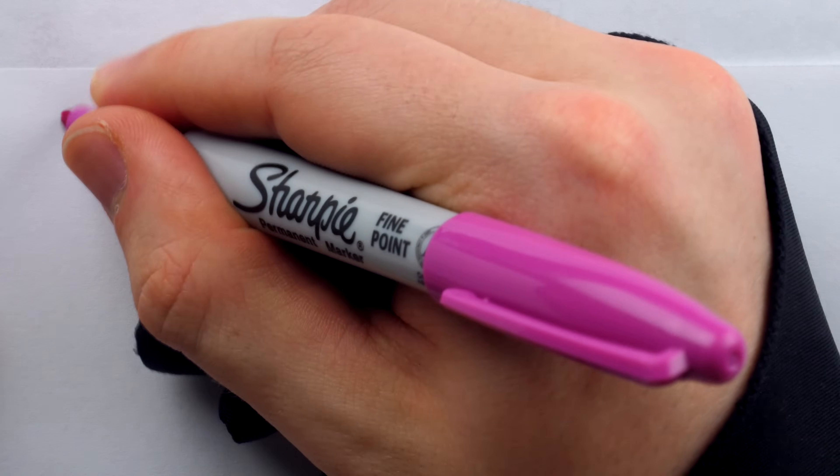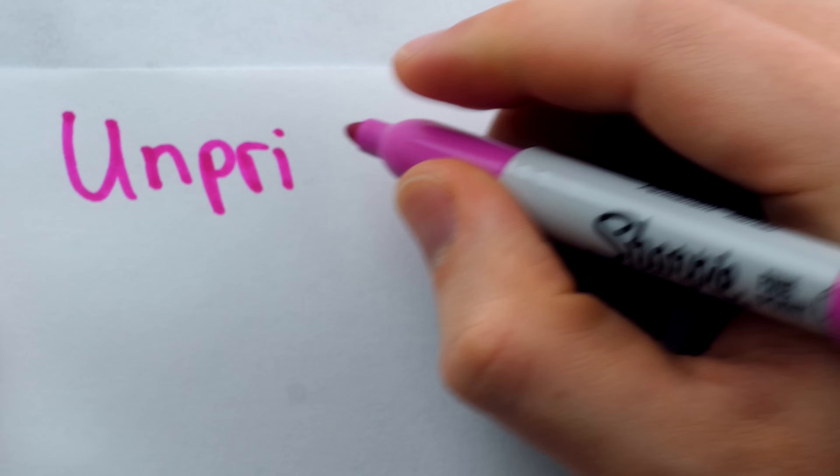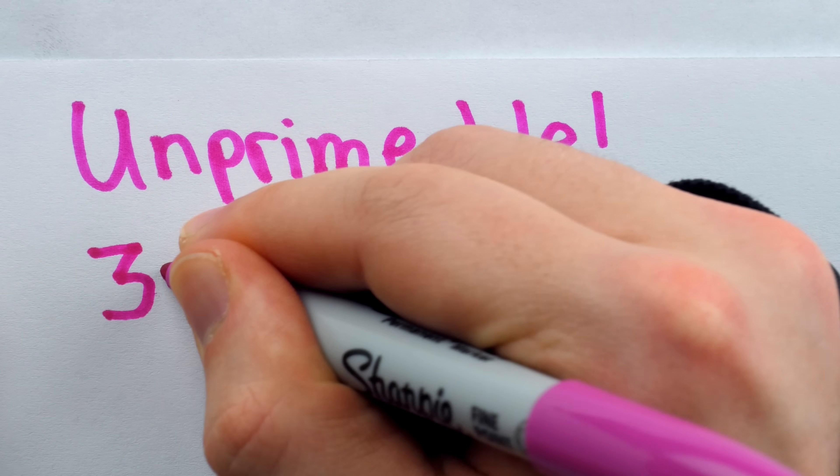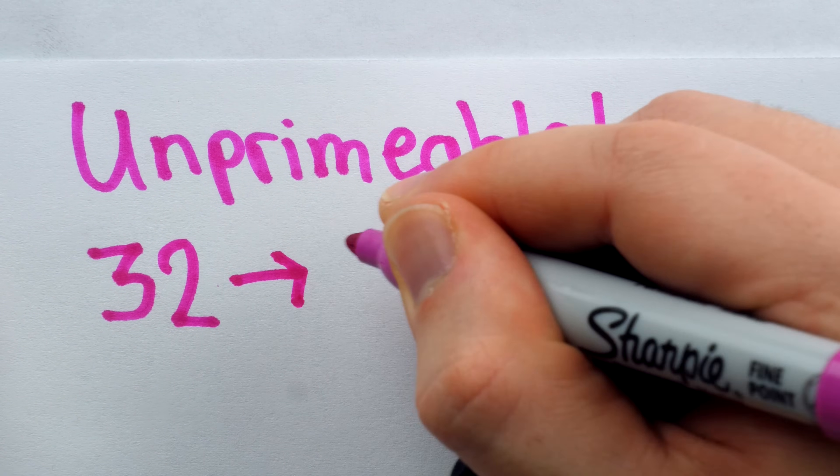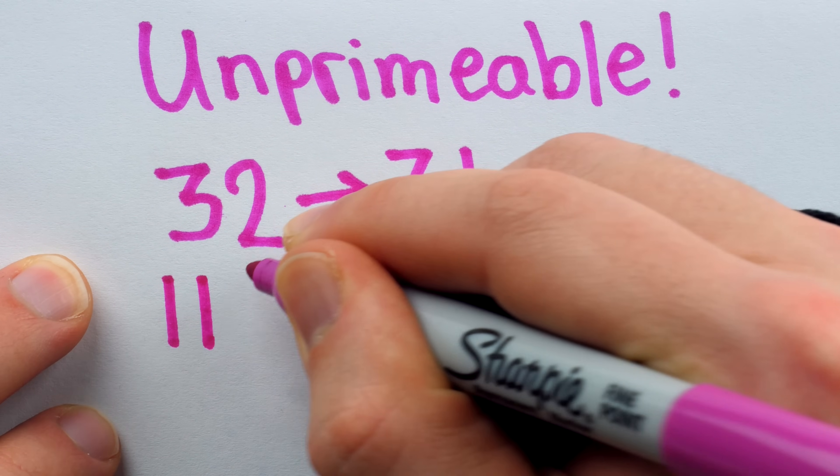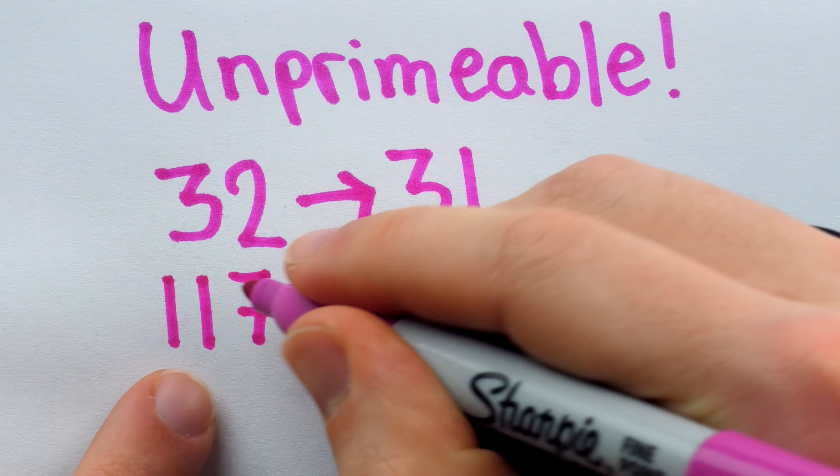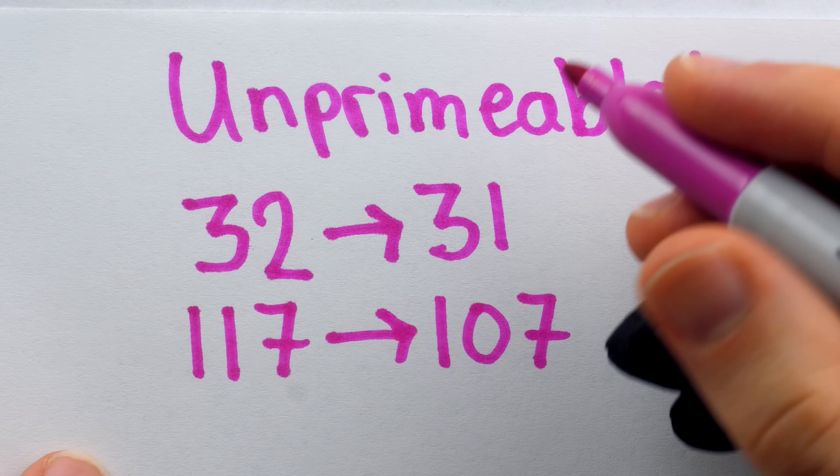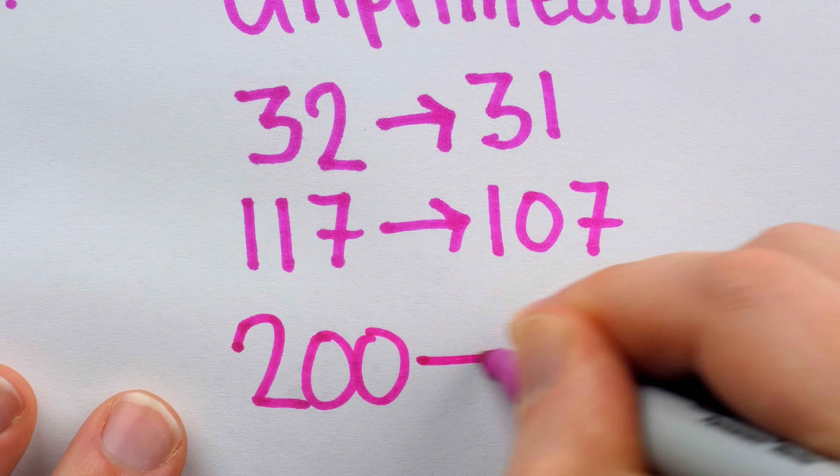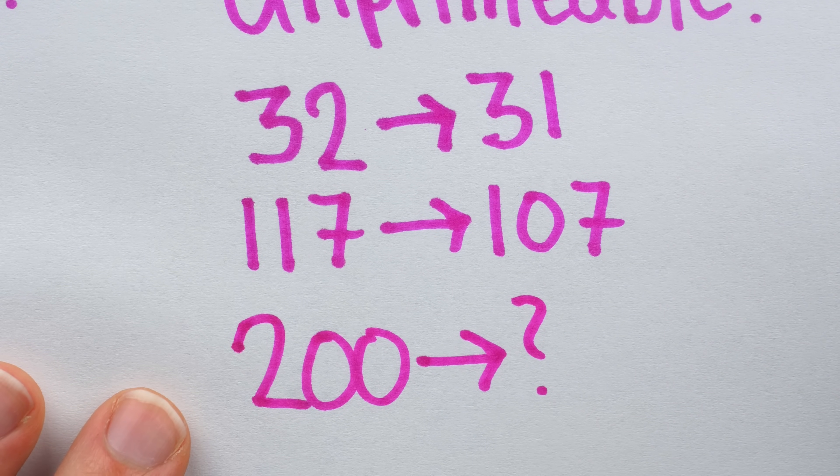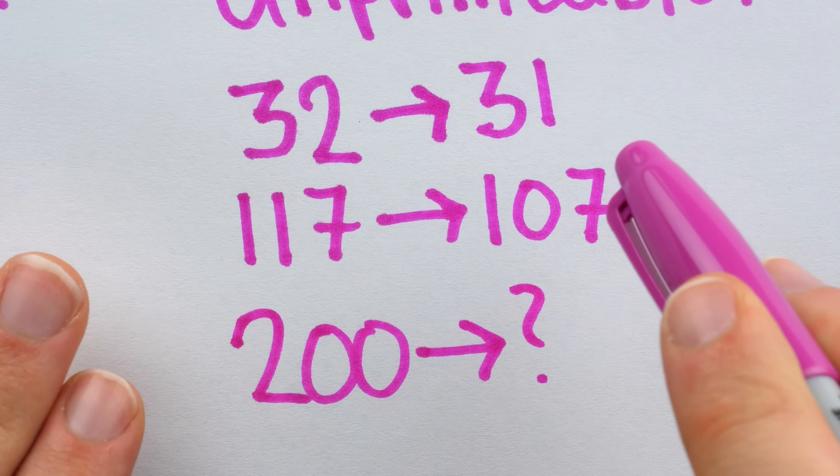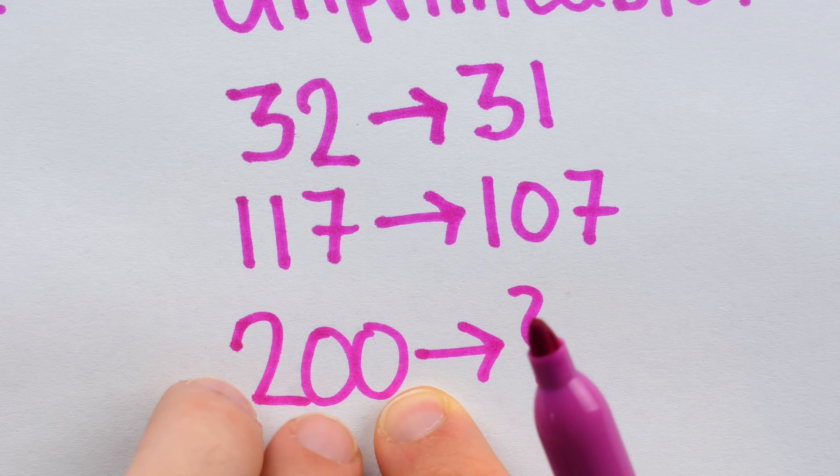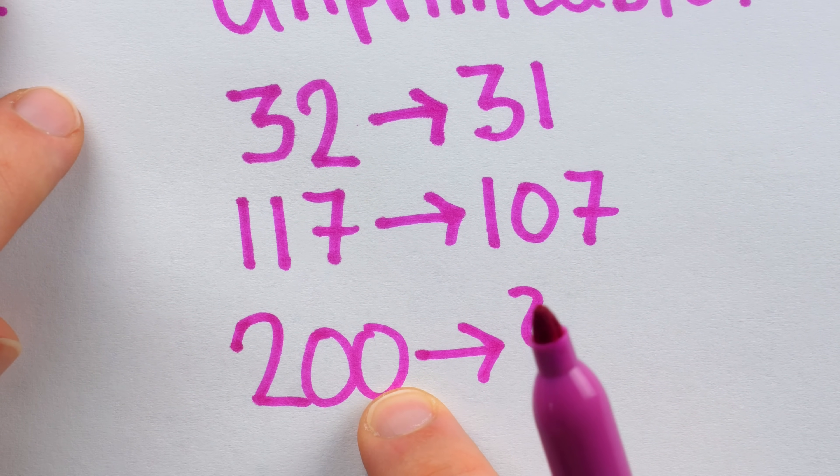Another interesting fact about 200 is that it's an example of what we call an unprimable number. This means it can't be made prime by changing a single digit. For example, the number 32 is not prime, but we can make it prime by changing the 2 into a 1. 117 is not prime, but we can make it prime if we change the tens place to a zero. In fact, we can make every positive integer prime in this fashion up until 200. 200 is the very first unprimable number. Again, there's no way to make it prime by changing a single digit. This is easy to verify because if it were possible to make it prime by changing a single digit, it would have to be changing the last digit. Because if we change either of the first two digits, well, it's still going to be even because the last digit would be a zero, so it couldn't possibly be prime.